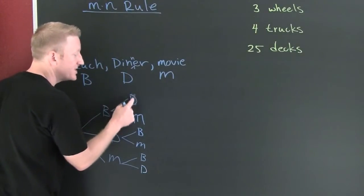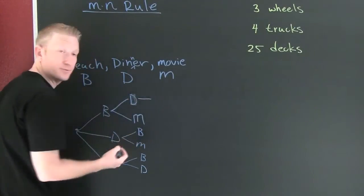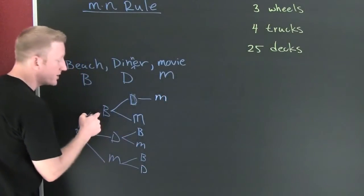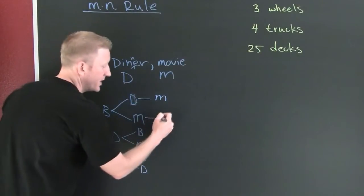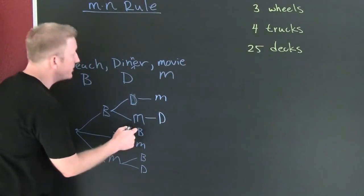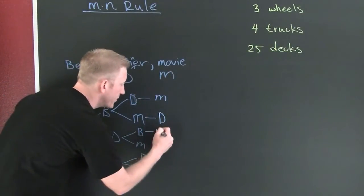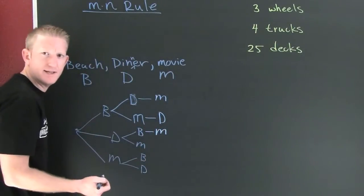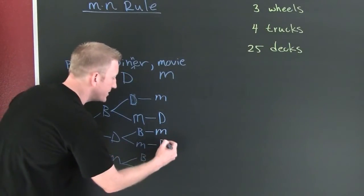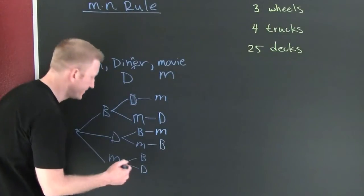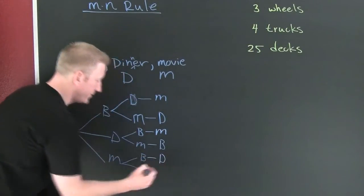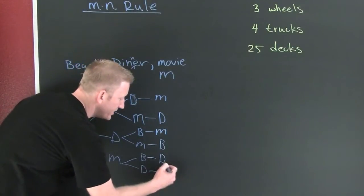But if you went to the beach first, and then went to dinner, you only had one more thing to do — the movies. Had you gone to the beach and then the movies, you wind up at dinner. Had you gone to dinner, and then the beach, you are forced to go to a movie after that — late night movie, a little shorter lines. Dinner, movie, end up at the beach. Movie, beach, you end up at dinner. Movie, dinner, end up at the beach.